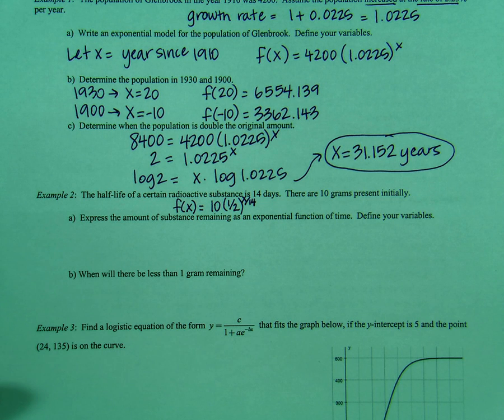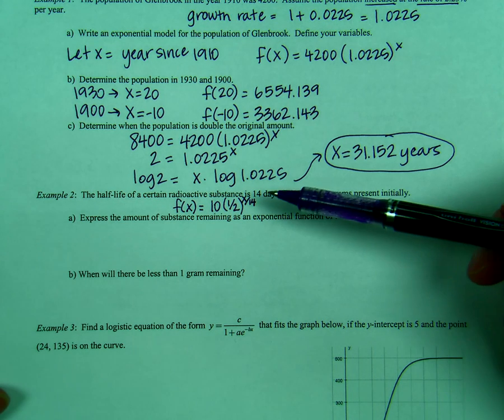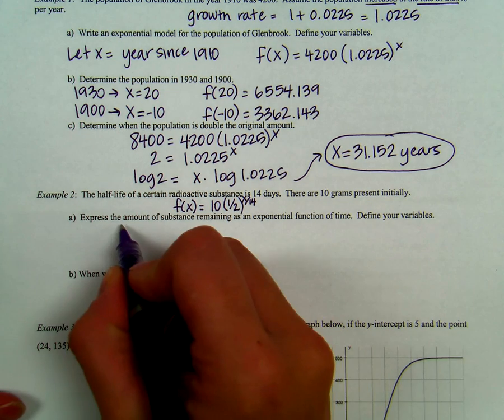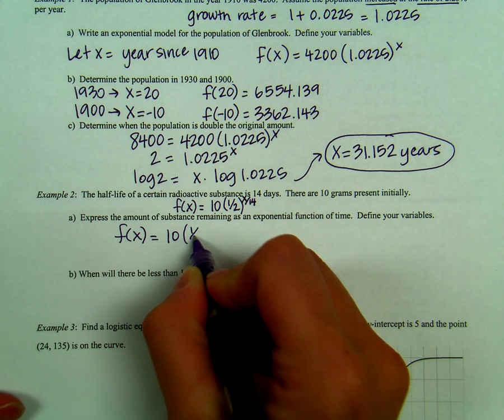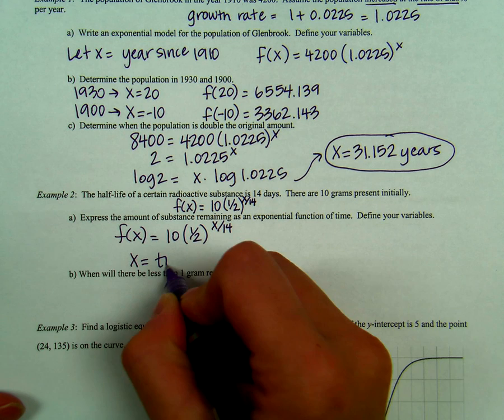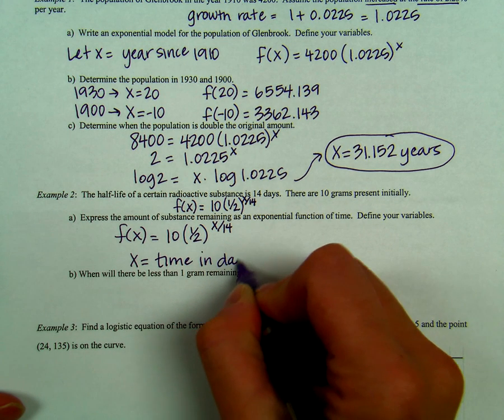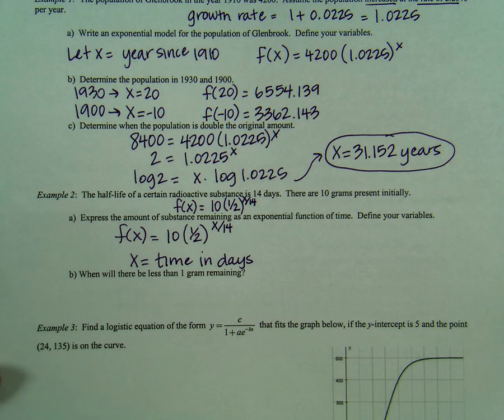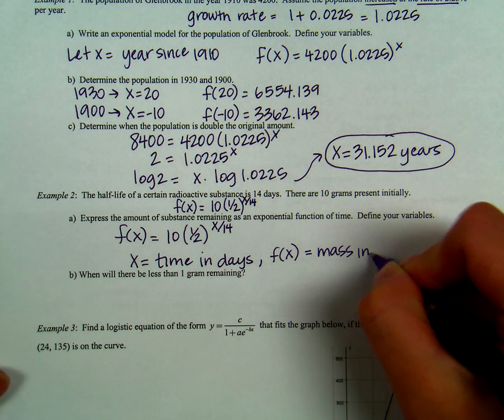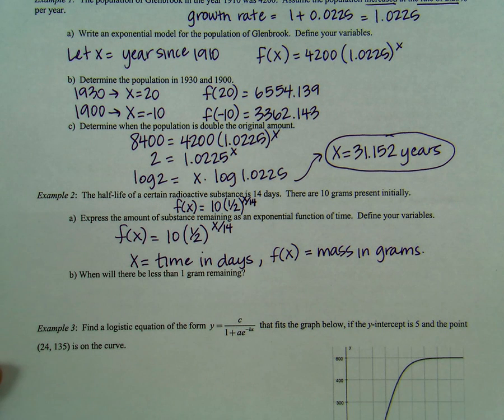So think about this for a second. If it decreases by half every 14 days, if we let x equal 14, we would have 10 times 1 half to the 1 power, meaning 10 times 1 half, which is 5. In A, it says, express the amount of substance remaining as an exponential function of time to find our variables. So we're going to take f of x equals 10 times 1 half to the x over 14 power. We're going to let x equal time in days, and that means that f of x is going to give us a mass in grams.